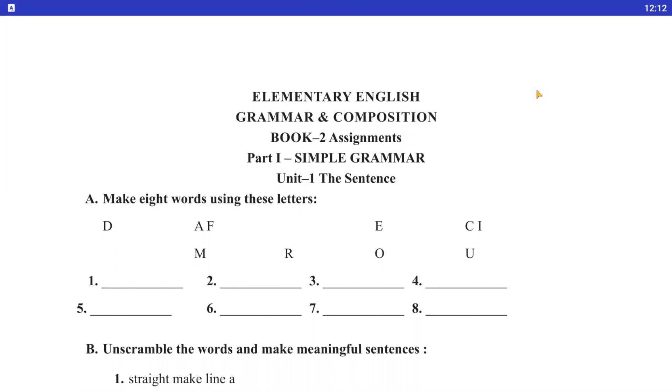So first exercise is here. Make 8 words using these letters. That means these letters: D, A, F, M, R, E, O, U, C, I. These letters use you to make new words. It's not that I'm starting from D. Whatever letters are given, all of them can make new words. Okay?